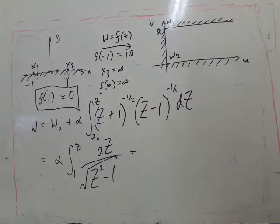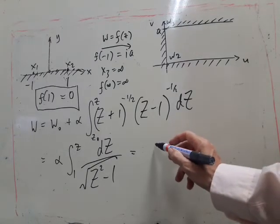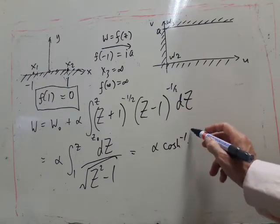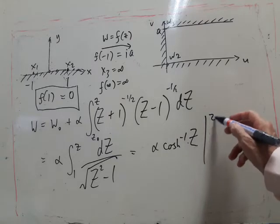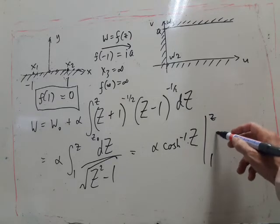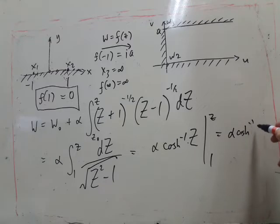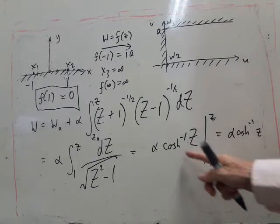So this is a standard integral. It gives you inverse cosh, so inverse cosh of big z evaluated between little z and one gives you alpha times inverse cosh of z since inverse cosh of one is zero.